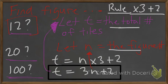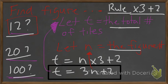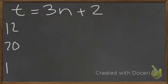So, to find specific figure numbers, I'm going to rewrite my rule. Rule was t equals 3n plus 2. And I'm looking for 12, 20, and 100. Remember, these are figure numbers as well. So, for figure 12, we want the total number of tiles. That'll equal 3 multiplied by the figure number, which is 12, plus 2. That's going to be 3 times 12 is 36, plus 2, and that equals 38.